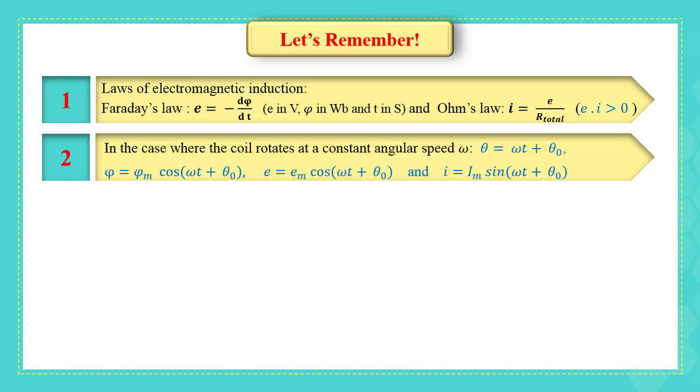Two, in the case where the coil rotates at a constant angular speed omega: theta equals omega T plus theta zero, phi equals phi M cosine omega T plus theta zero, E equals E M cosine omega T plus theta zero, and I equals I M sine omega T plus theta zero.